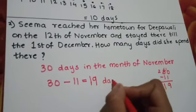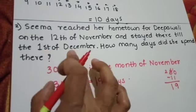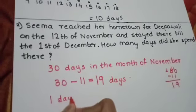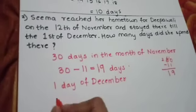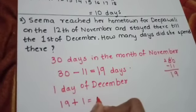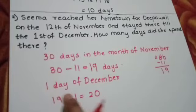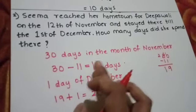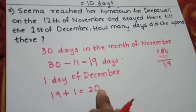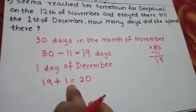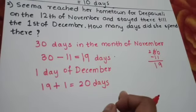She was staying till 1st of December — that is one day of December. 19 plus 1 is 20. So 19 days of November and 1 day of December — we add together. 19 plus 1 is 20. So 20 days she was spending in her hometown. Have you all understood?